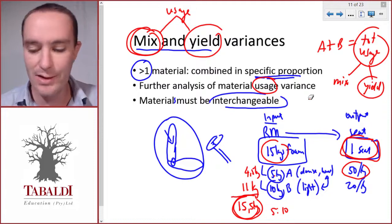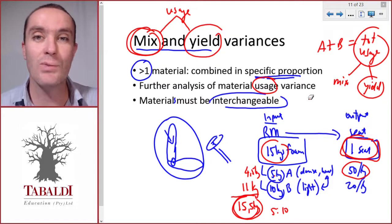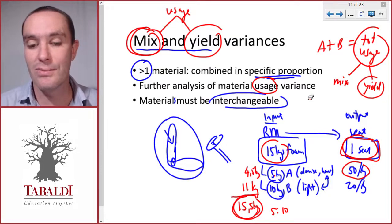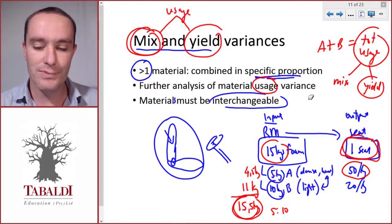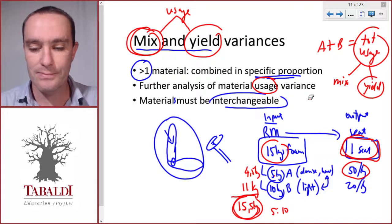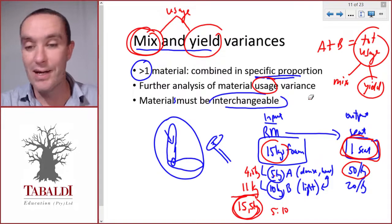So this might not make sense yet, but we'll do an example next - a class example explaining the mix and yield variance, and hopefully it'll make sense after that.